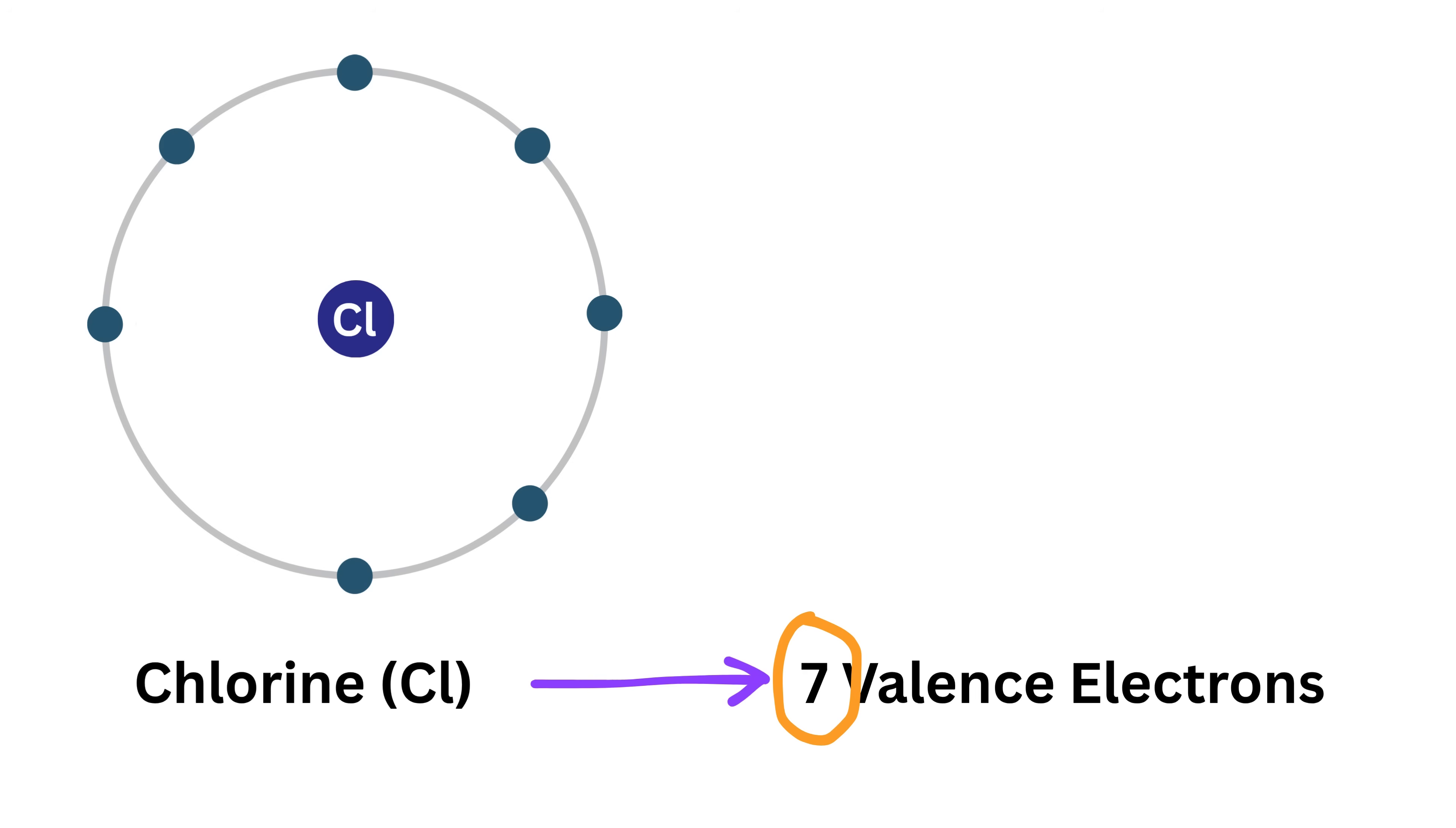A Lewis diagram is a simple visual representation that shows the valence electrons around an atom. Instead of writing out complicated electron configurations like 1s² 2s² 2p⁶ 3s² 3p⁵, we can just show the symbol of the element and dots around it to represent its outer electrons. So here we have these seven electrons as valence electrons for chlorine—that would mean we draw the symbol Cl and then place seven dots around it.